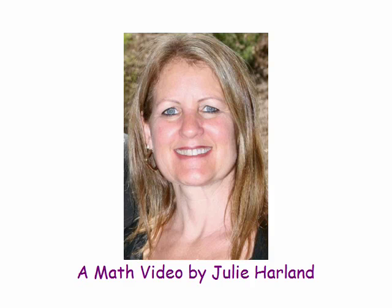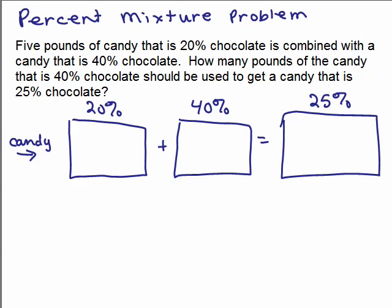Math is cool and you can do it. We're going to go over this percent mixture problem. Five pounds of candy that is 20% chocolate is combined with a candy that is 40% chocolate. How many pounds of the candy that is 40% chocolate should be used and combined to get a candy that is 25% chocolate?